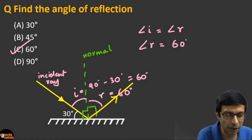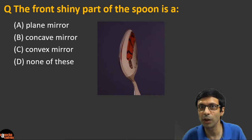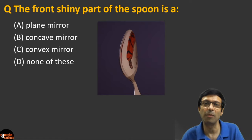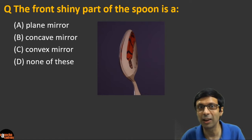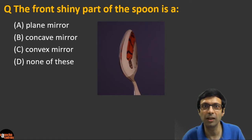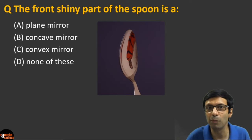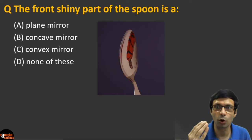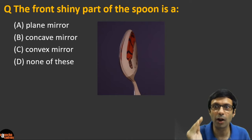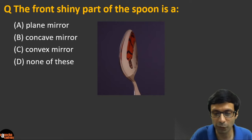Now let's move on to the next question. As mentioned before, a spoon is a great example of a spherical mirror. Looking at the front shiny part of the spoon — is it (a) a plane mirror, (b) a concave mirror, (c) a convex mirror, or (d) none of these? Next time you play with your spoon, check which type of mirror it is.